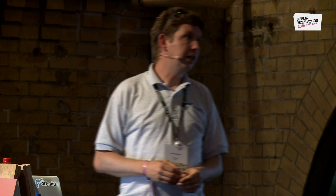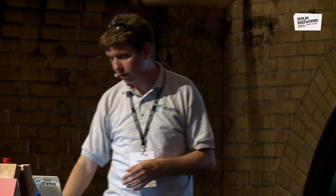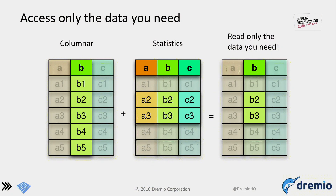Parquet enables optimized I/O through projection pushdown — reading only the columns you need — and filter pushdown, which takes advantage of statistics stored in the file to skip entire chunks. If you filter by a certain range and you know the minimum and maximum value in each chunk, and those don't match your range, you can skip the entire block. With both vertical and horizontal partitioning, you limit I/O to the minimum.